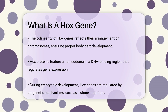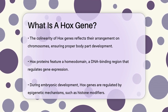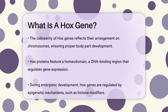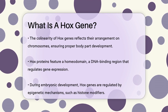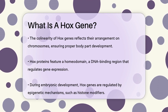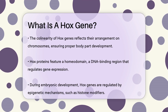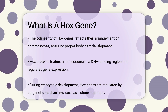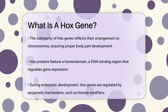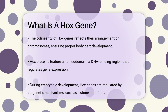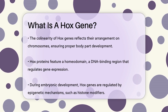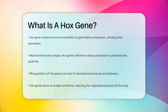During embryonic development, HOX genes are tightly regulated by epigenetic mechanisms, such as histone modifier complexes. For instance, in vertebrates, HOX gene clusters are initially inaccessible and become available as gastrulation proceeds, allowing the progressive expression of HOX genes in the developing embryo.